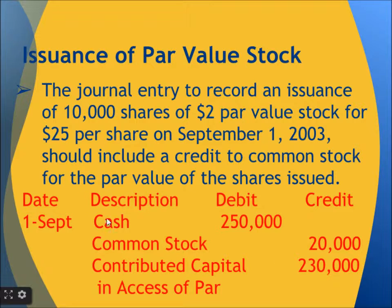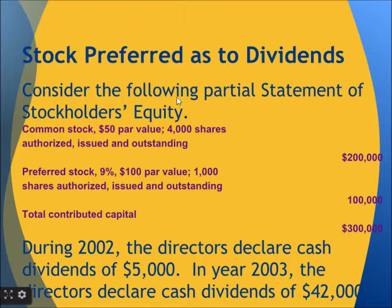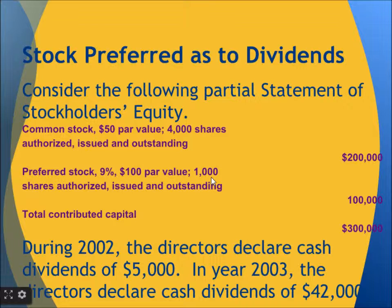Now let's learn about preferred stock. Common stock is at $50 par value with 4,000 shares authorized, issued, and outstanding. The value of common stock will be par value multiplied by number of shares: 4,000 times $50 gives us $200,000. Preferred stock is issued at $100 par value with 1,000 shares issued, so preferred stock value will be 1,000 multiplied by $100, giving us $100,000. Total contributed capital is $300,000.